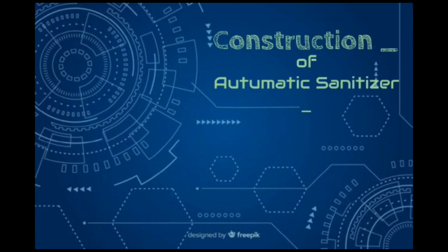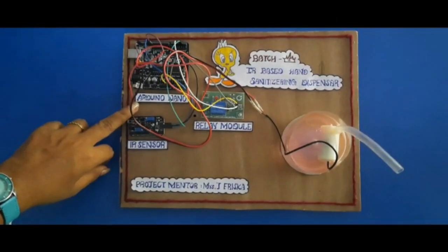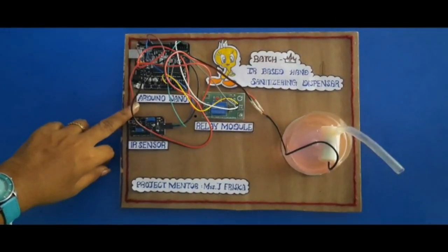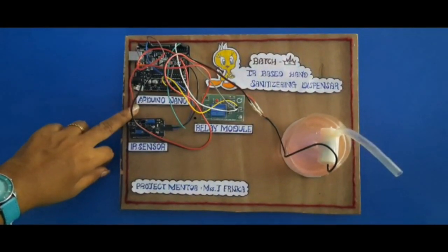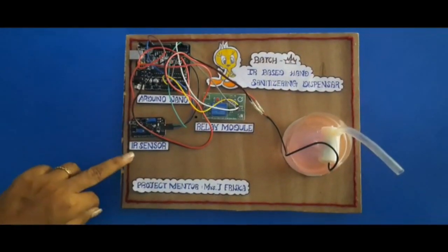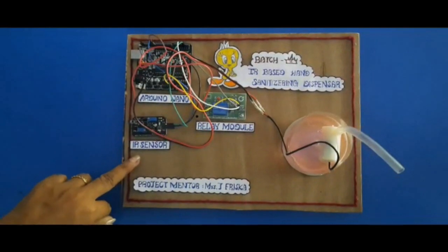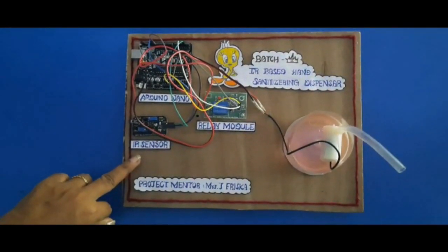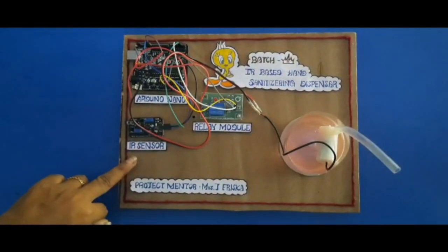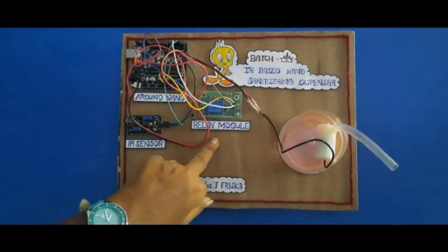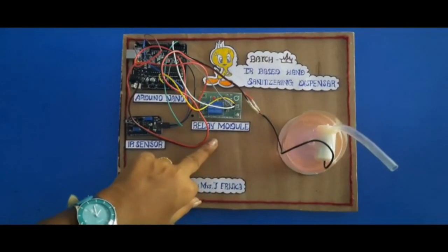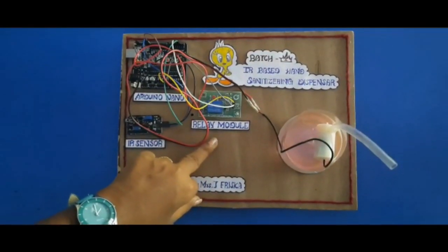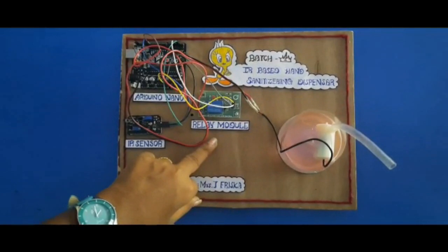Now, we are going to see the construction of an automatic sanitizer. Ground in Arduino is connected with the ground in infrared sensor. The 5V in the Arduino is connected with the 5V in the infrared sensor. The output in the infrared sensor is connected with pin 2 in Arduino. The relay module VCC is connected with the 5V from Arduino. The ground is connected with the GND in Arduino. The relay module input is connected with pin 13 in Arduino.